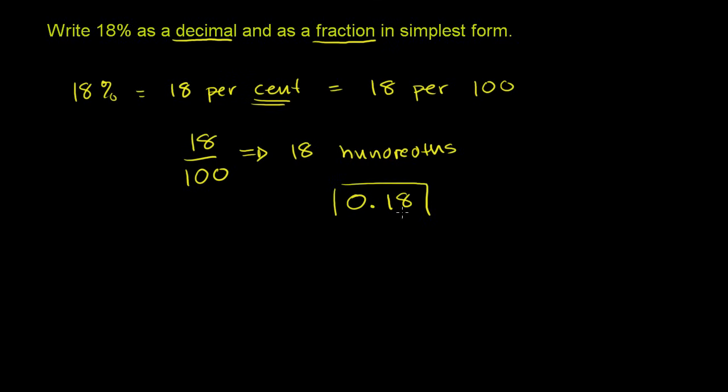So this is written in decimal form. And if we write it as a simplified fraction, we need to see if there is a common factor for 18 and 100. And they're both even numbers, so we know they're both divisible by 2.